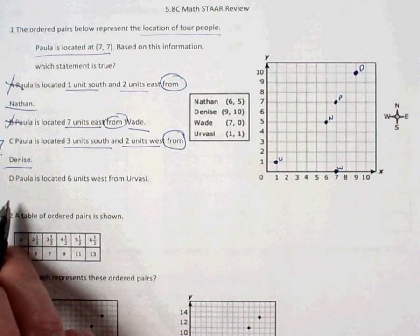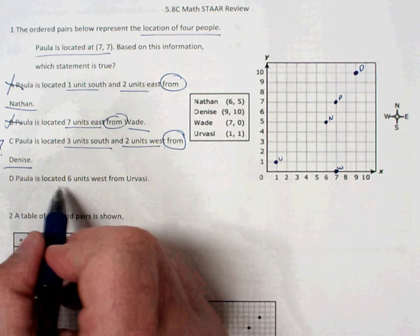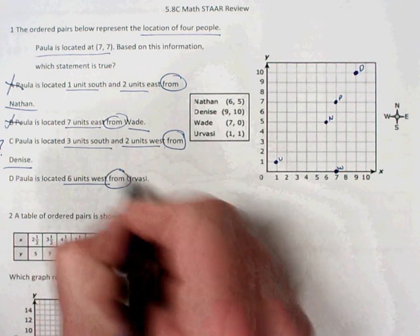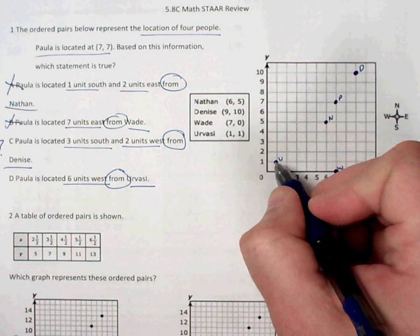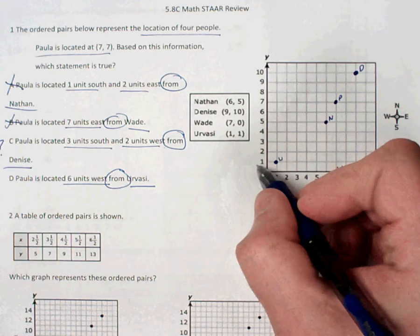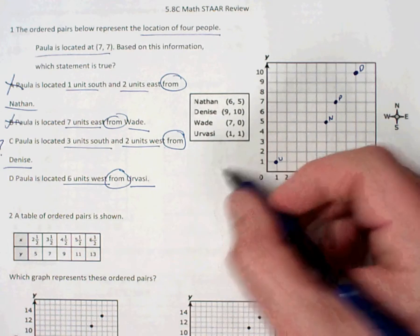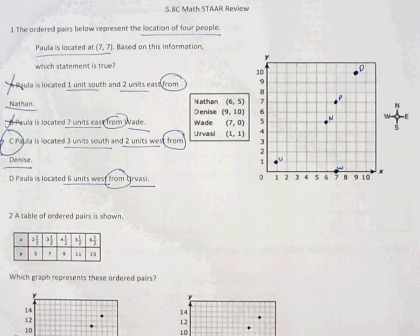Let me check the last one just to make sure. Paula is located 6 units west from Urvasi. Here's Urvasi. 6 units, and if I go west, I'm going to end up off the grid completely. So C is going to be my correct answer on that.